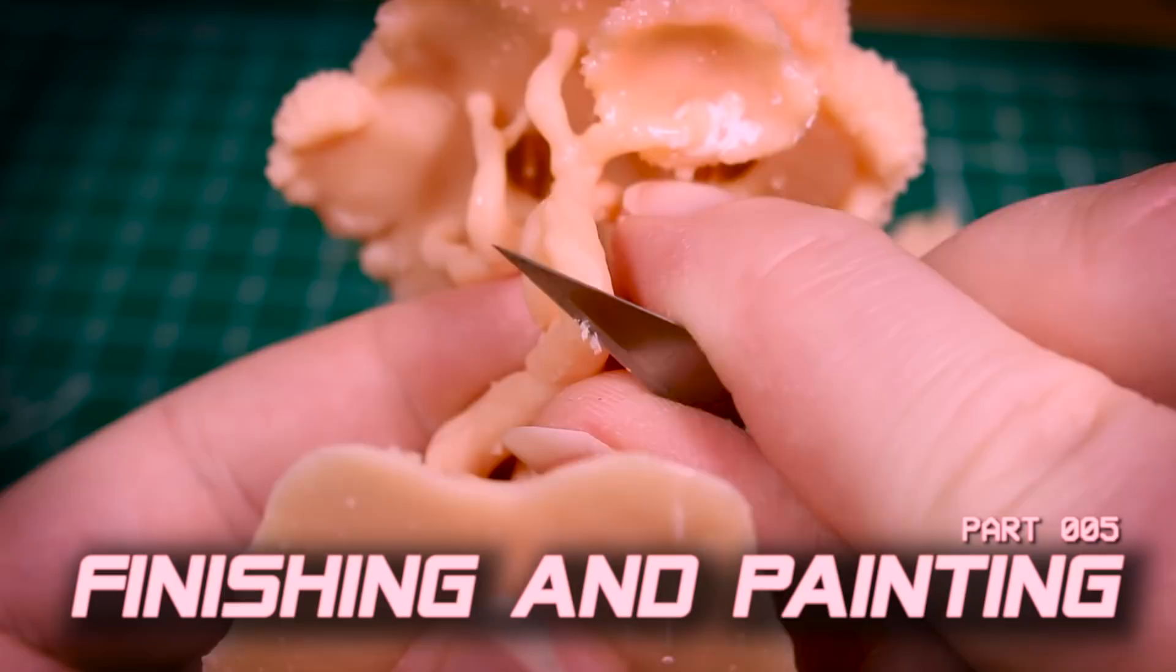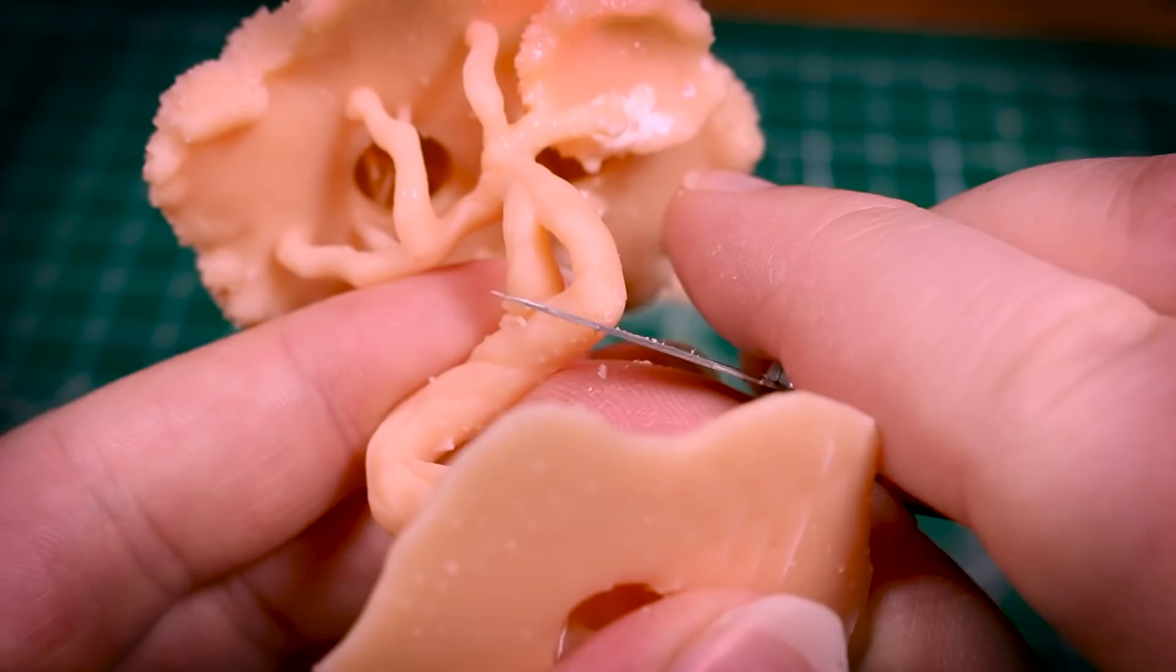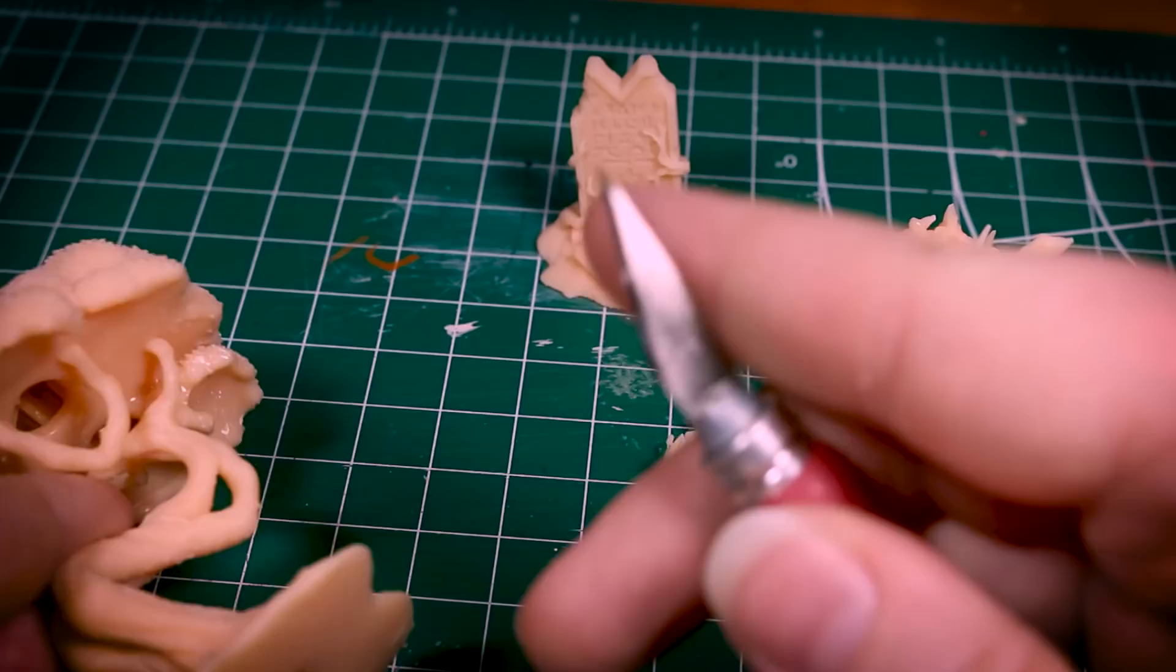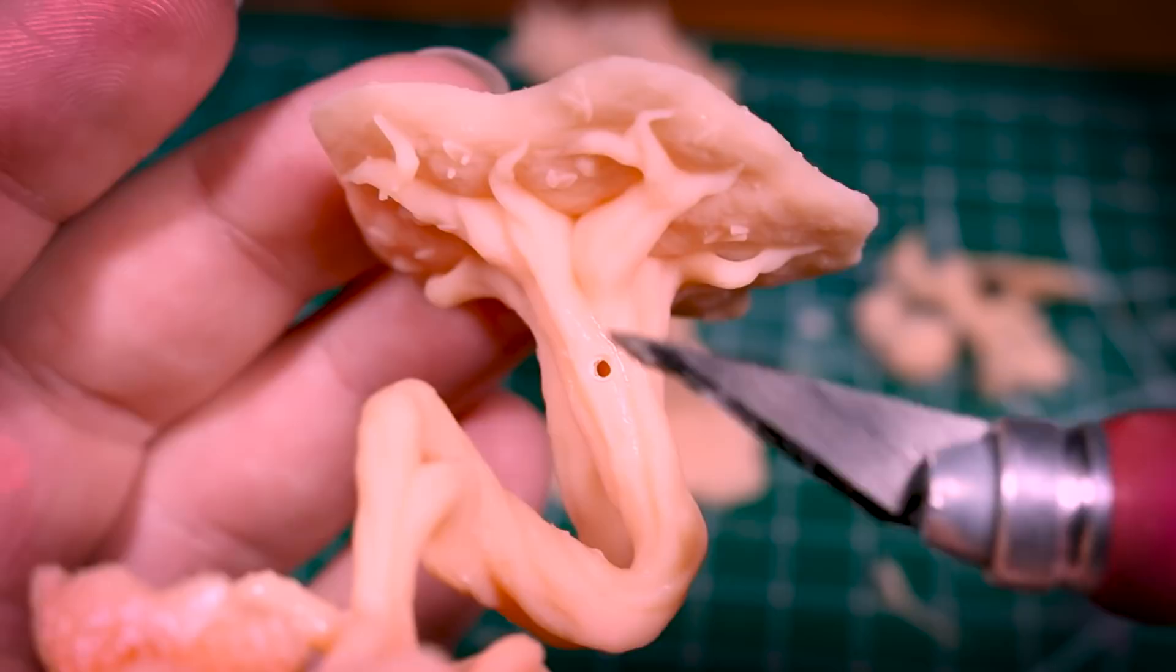We can finish these models in the same way we would any metal models, using a hobby knife or sanding tools to remove any little bits left over from the supports. The only difference here is that resin dust can really mess up your lungs if you breathe it in, so I like to wear a respirator for this part, and then clean up the dust fully with a wet paper towel afterwards.